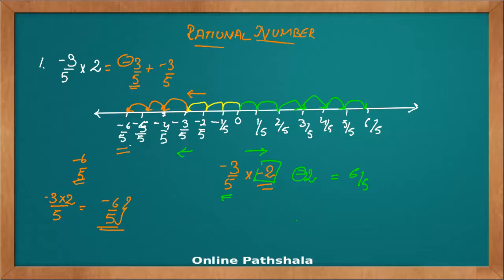Now let's see if I get the same answer by the rule of fractions, where the denominator remains the same and we just multiply the numerator. And yes, the answer is the same. It is minus 3 into minus 2, which is 6 by 5.